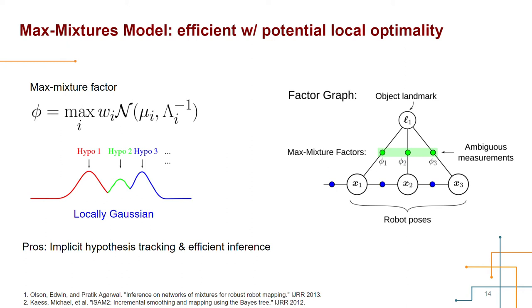Therefore, with the implicit hypothesis tracking and the Gaussian preserving factors, we can use the traditional SLAM optimizers to efficiently solve the max mixtures model. In this work, we use the incremental solver iSAM2 to perform online SLAM inference. The downside of this model is we have no idea whether the current mode selection is correct or not, because the gradient-based solvers don't have global understanding of the dominant pose hypothesis. So it's likely for the solution to be trapped in some local minima without a good initialization.